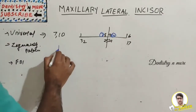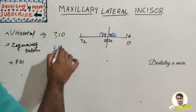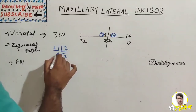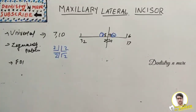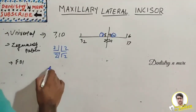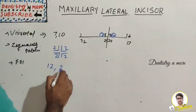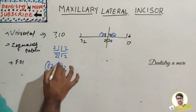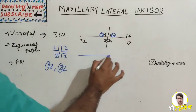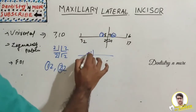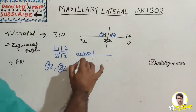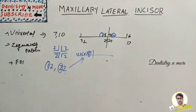So our lateral incisor comes at seven and ten in the Universal system. In the Zsigmondy-Palmer system, the notation is different, and in the FDI system it is 1.2 and 2.2 — the first digit represents the quadrant and the second represents the tooth. Counting one through eight, tooth number two is the lateral incisor.